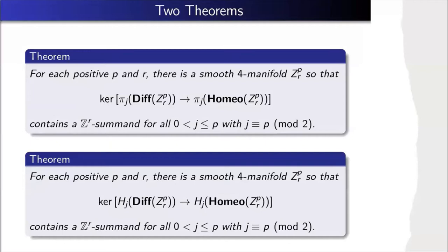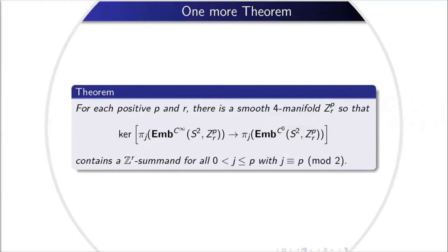In addition to results about diffeomorphisms, you can also get results about spaces of embeddings. If you look at homotopy groups from smooth embeddings of a two-sphere into your manifold versus continuous embeddings, you'll have families that topologically contract but don't smoothly contract. Now that I've stated these results, to prove them you have to construct suitable families — and not only construct the families, but construct them in such a way that you can compute relevant invariants.